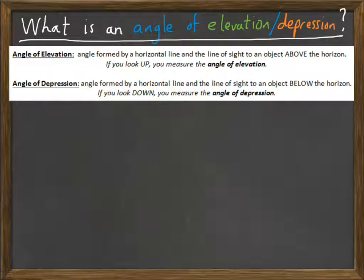The angle of depression is like the angle of elevation, but it's with you looking down. It's the angle formed by a horizontal line and the line of sight to an object below the horizon. So if you look down, you're measuring the angle of depression. Let's put a picture to this to help you see it.